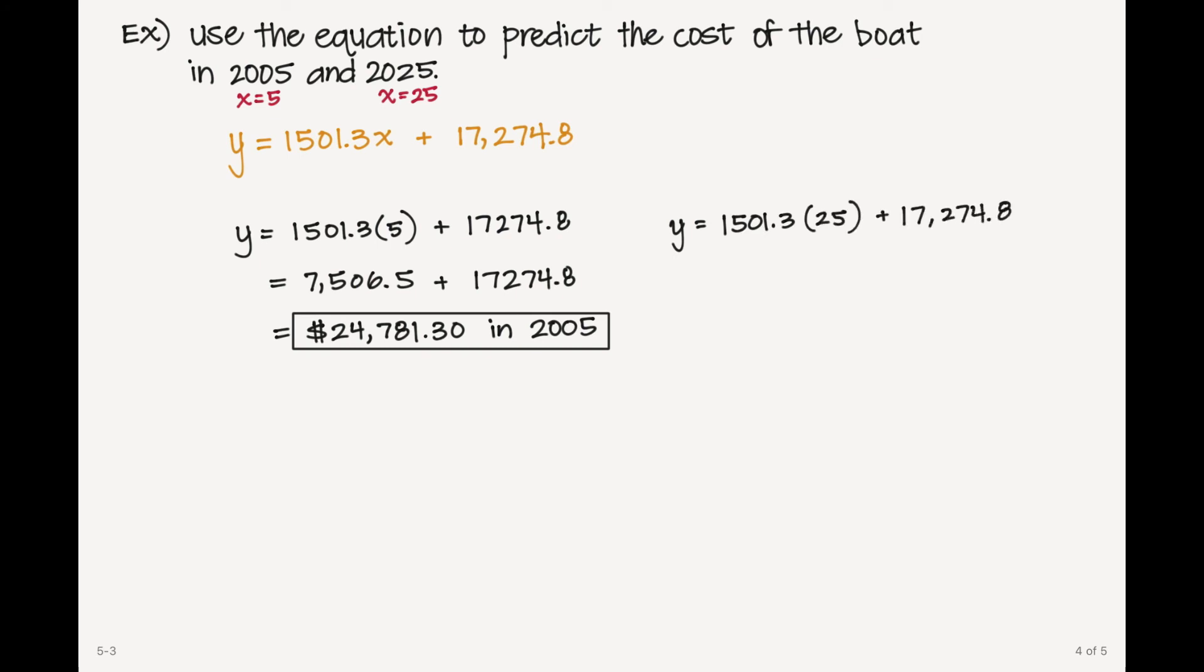Now we're going to repeat this process for the value of 25. And when I plug that in and multiply, I get 37,532.5 added to my 17,274.8 for a grand total of $54,807.30 in the year 2025. And I'm done.